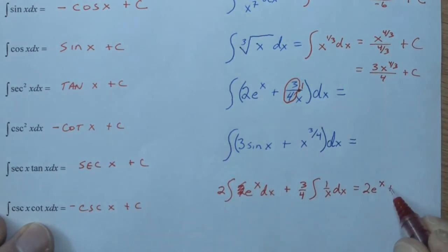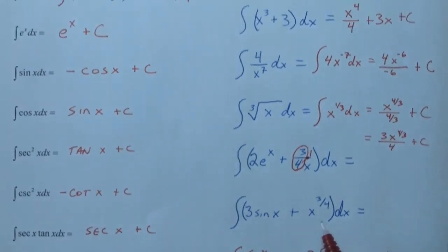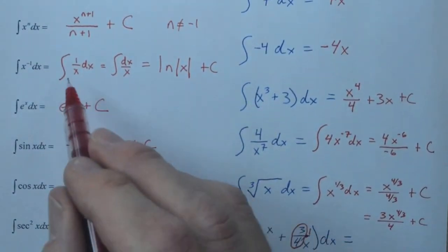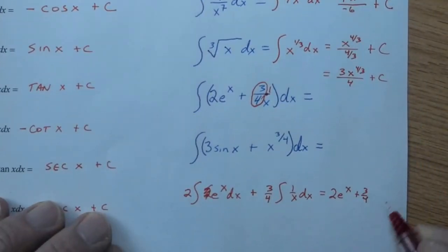And then we have 3 quarters, because that's still there. But 1 over x, well, we know from the previous video, that's the anti-derivative is the natural log of the absolute value of x. So, we're going to have 3 quarters, then natural log absolute value of x, and then plus c.